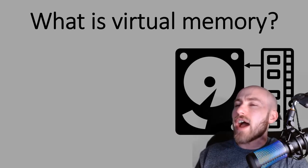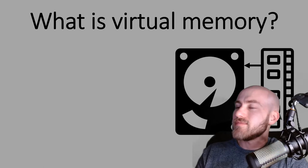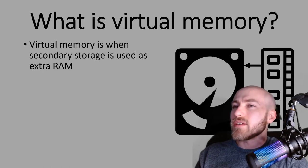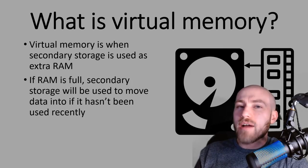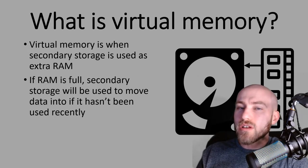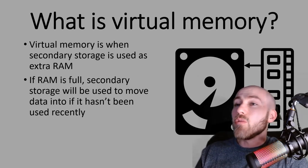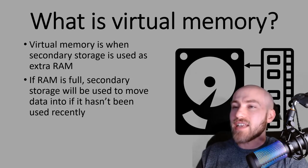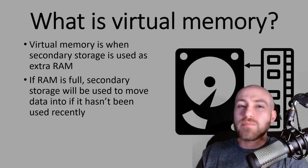Let's look at our final type of memory. We've got something called virtual memory. Virtual memory is not necessarily a good thing — it's when your secondary storage gets used as extra RAM. What that means is your RAM, your main memory, is full — filled to capacity. When it's full, that's when your secondary storage device steps in and acts as RAM so that you can free up a little bit of space.